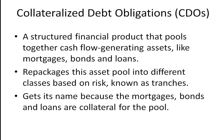The difference from general securitization is that rather than just creating one class of asset, a number of different classes of assets are created, each with different levels of risk. People have different appetites for risk — some want to take more risk and receive a higher return, others are looking for very safe investments. The name 'collateralized debt obligation' comes from the fact that the mortgages, bonds, and loans are the collateral for this pool of assets.